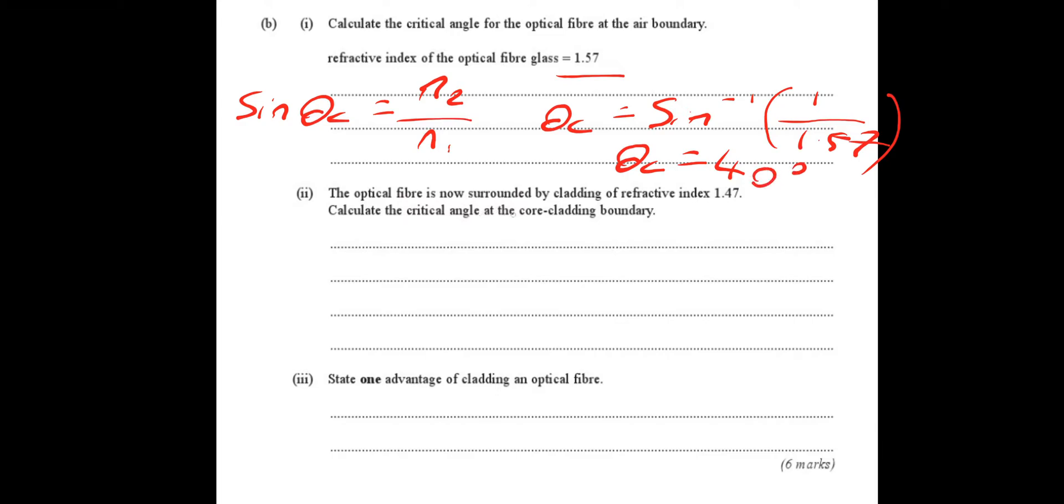So the next one, the optical fiber is now surrounded by a cladding of refractive index 1.47. Calculate the critical angle. So now it's the same again. So theta c is equal to the inverse sine of N2 over N1. And this time N2 has been, the air has been replaced with the cladding of 1.47, divided by the fiberglass, which is still the 1.57. So if you put that in your calculator, the critical angle will be 69 degrees.